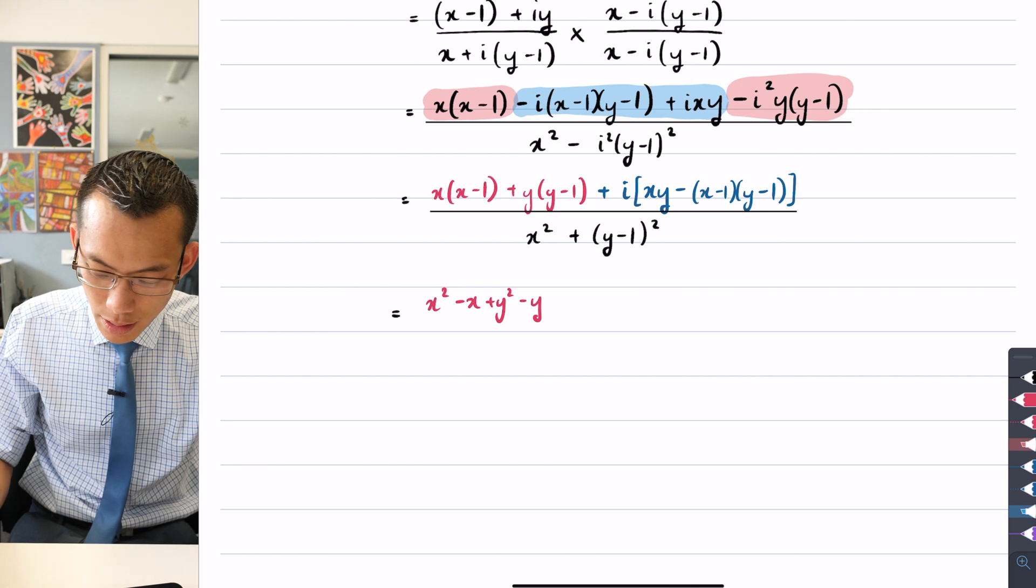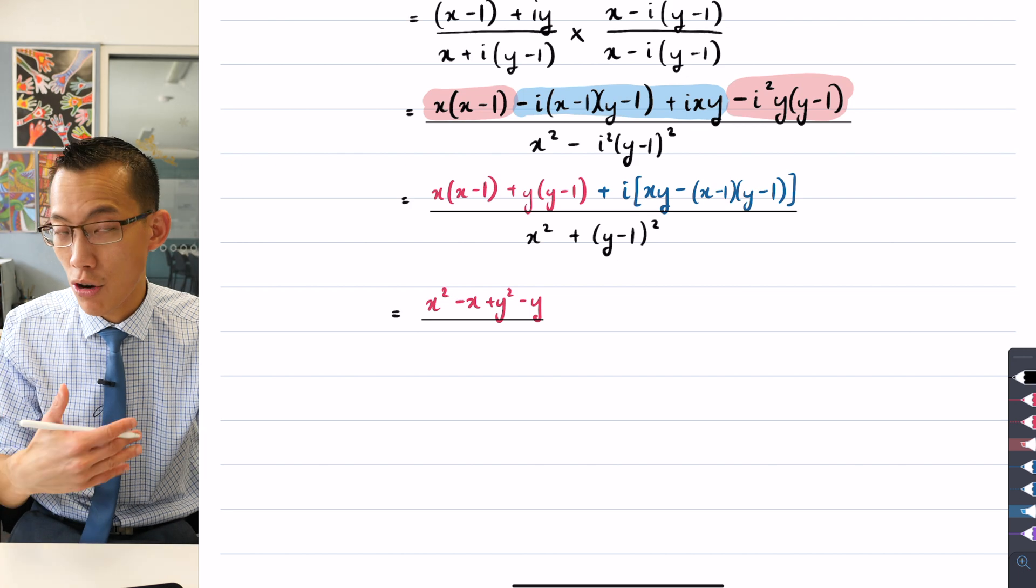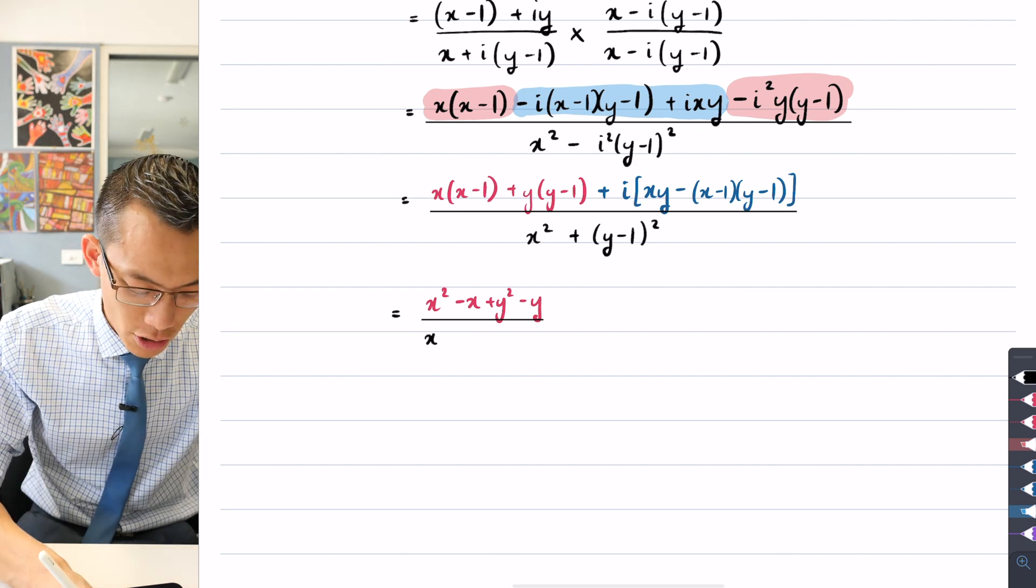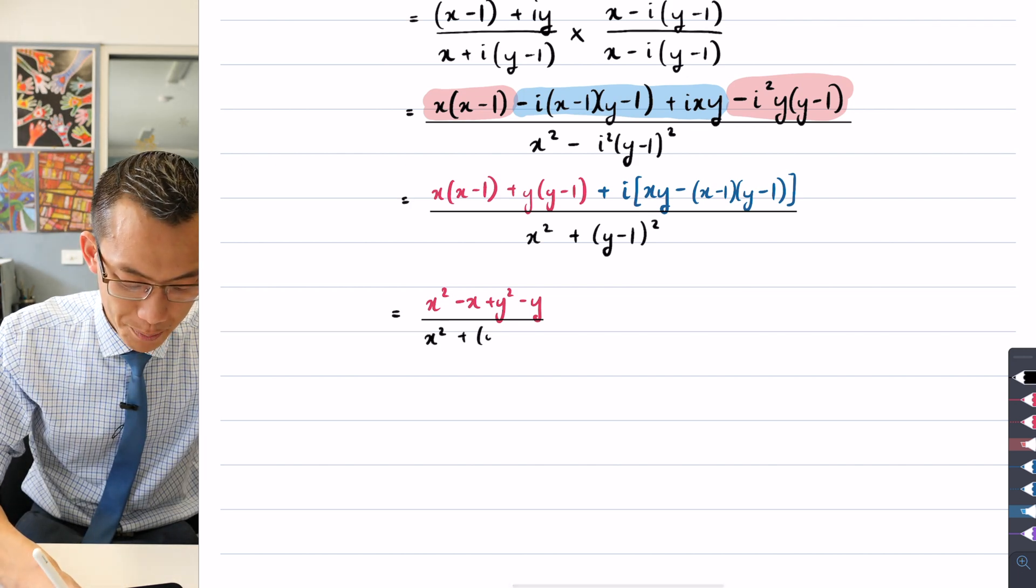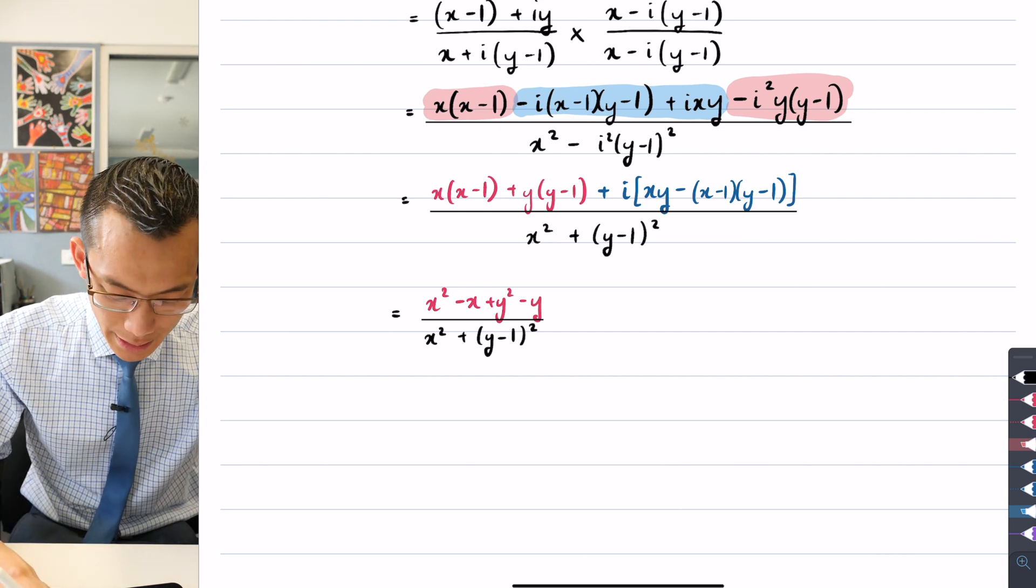And then while I'm at it, I might as well separate this out as its own fraction because this is all the real components, there are no more imaginary bits. So the denominator comes along for the ride, x squared plus (y - 1) squared as we saw in the previous line.